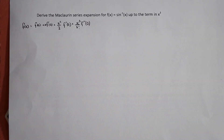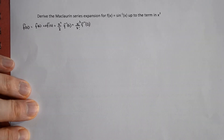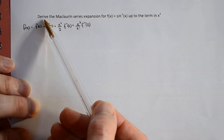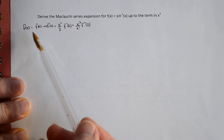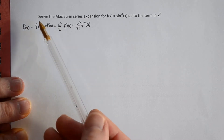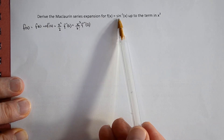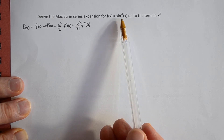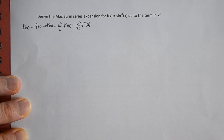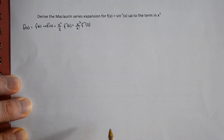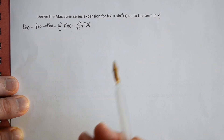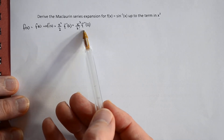Let's have a look at this example together. We're being asked to derive the Maclaurin series expansion — when it says derive, it's telling us to use the formula, which I've written out here. Even if we weren't told that, looking at the function — arc sine or inverse sine of x — that's not a standard one, so it's probably one you'd have to derive anyway. The other information we're told is how far to take the expansion.